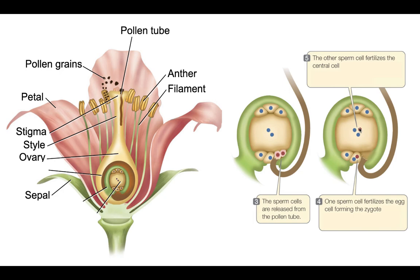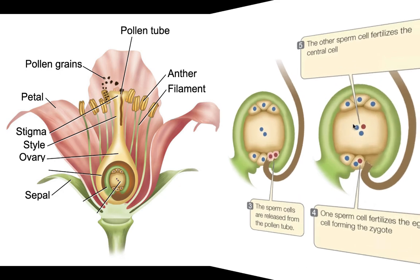The ploidy of the endosperm is really interesting. You can see that there are three haploid nuclei here, so we call them 3N. The endosperm is triploid. So let's have a quick look at the anatomy of a flower and the key features in the process of double fertilization.